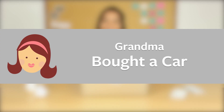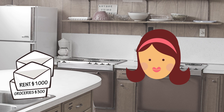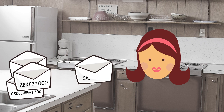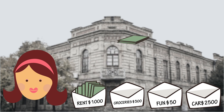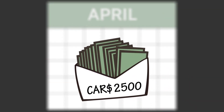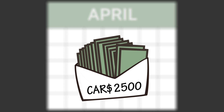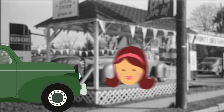But first, let's see how Grandma paid for a car the old school way. Back in the day, Grandma saved up each month so she could buy a car in cash. In addition to her regular envelopes, she made a car fund envelope with a goal of $2,500. Each month when she got paid, she went to the bank and took out cash for the things she needed — $1,000 for rent, $300 for groceries, $50 for fun, and she saved $100 each month for her car fund envelope. After some time, she had her car fund envelope fully funded with $2,500. Then she went to the car dealership to buy the car she had her eye on, and she paid for it all at once.